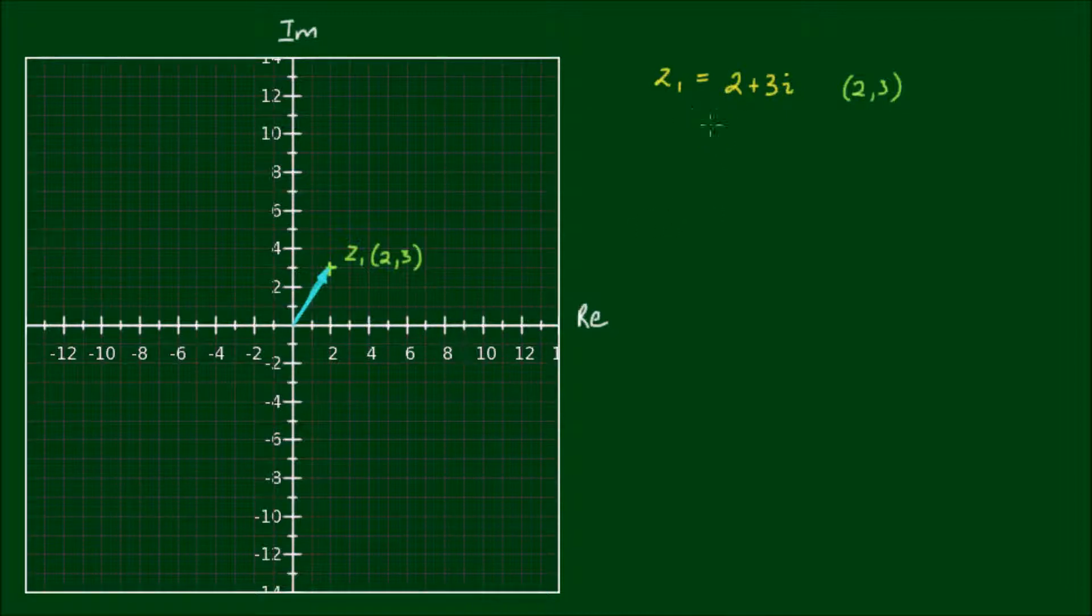Now let's say that we have the complex conjugate of this complex number z1. So z1 bar, and by the way, this form of the complex number, this a plus bi form, or a plus ib form, is what we call the Cartesian form of the complex number. So the complex conjugate of z1 in Cartesian form is 2 minus 3i.